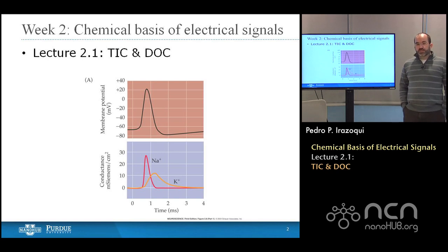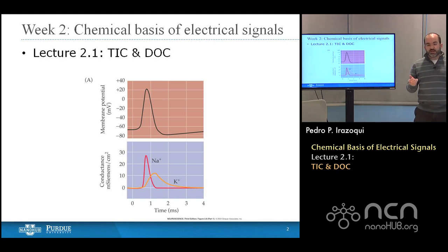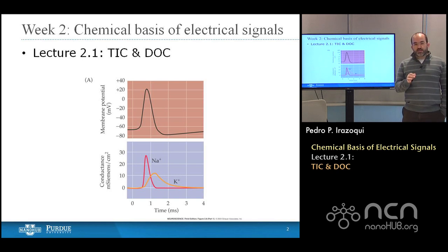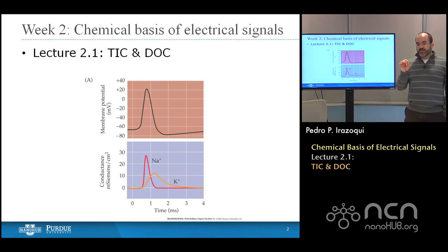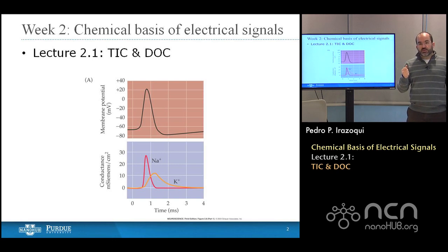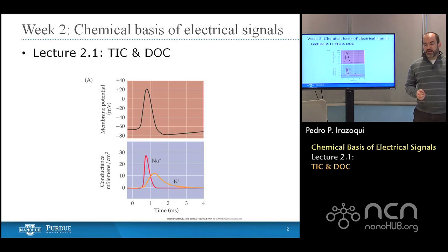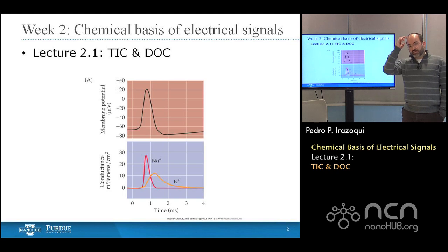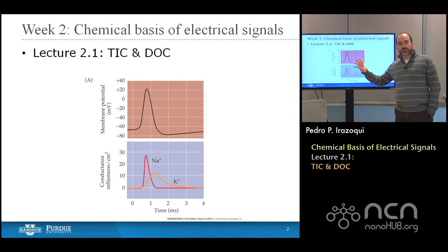In week two, we're going to talk about the chemical basis of electrical signals. But to begin with, we need to understand what sorts of signals we're talking about. Today in this lecture, we're going to talk about TIC and DOC. TIC stands for Transient Inward Currents, and DOC stands for Delayed Outward Current. These tell us about the chemical basis of electrical signals and will inform our exploration of how ion channels and neurotransmitters work at delivering postsynaptic potentials and action potentials, combining into circuits which give rise to reflexes and thoughts and all sorts of cortical processing.